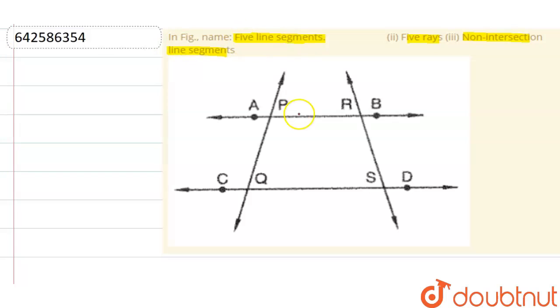So five line segments: AB is a line segment, CD is also a line segment, and you can see PQ, QS, and RS are also line segments.